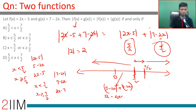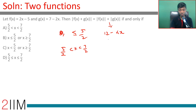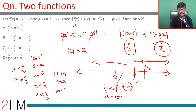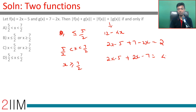So we look at three intervals: x ≤ 5/2 gives 12 - 4x; for 5/2 < x < 7/2, x > 5/2 gives |2x - 5| = 2x - 5, and x < 7/2 gives |7 - 2x| = 7 - 2x, so the sum is (2x - 5) + (7 - 2x) = 2. For x ≥ 7/2, it becomes (2x - 5) + (2x - 7) = 4x - 12. So only the middle range gives the value 2.